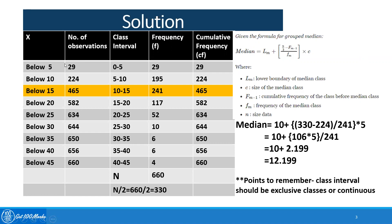The first thing for doing this kind of question is to create a class interval, and then the next column will be frequency. So 0 to 5 is my first class interval because it is given 'below 5', meaning 0 to 5. The number of observations will be as given, so frequency will be 29. For 'below 10', the class interval will be 5 to 10. The frequency will be 224 minus 29, which is 195.